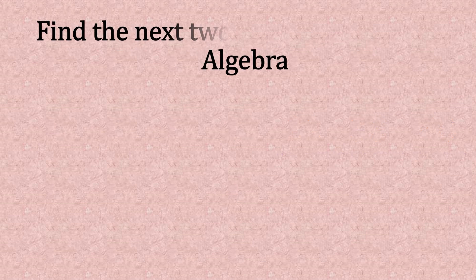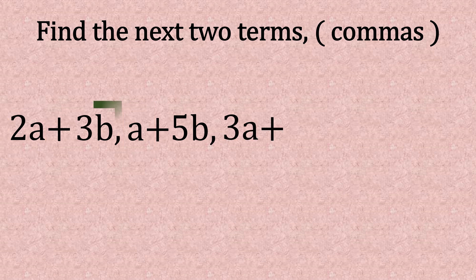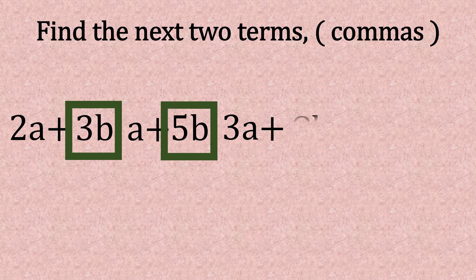This sequence can be used for algebra. Let's step it up. Now the terms are separated by commas. So let's have a go. We've got 2a and a. If we add them up, that gives us 3a. Next, 3b and 5b, we know that's 8b.